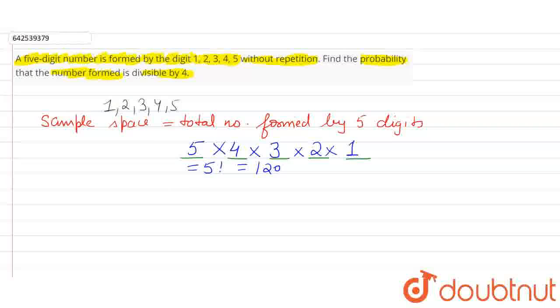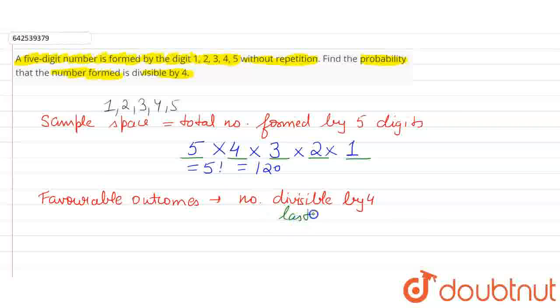Now this is our total cases. Favorable outcomes would be the numbers divisible by 4. So for a number to be divisible by 4, its last 2 digits should be divisible by 4.